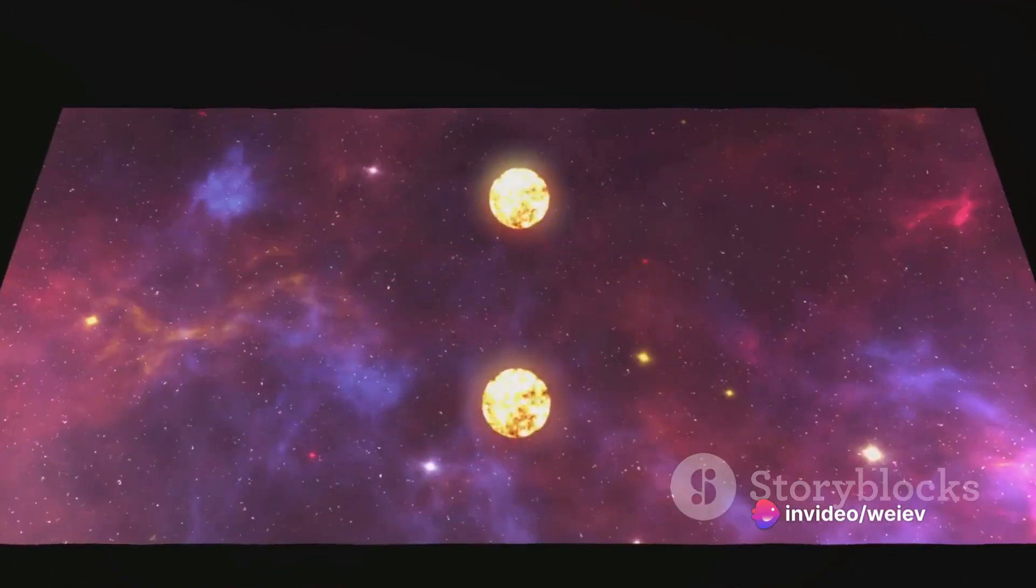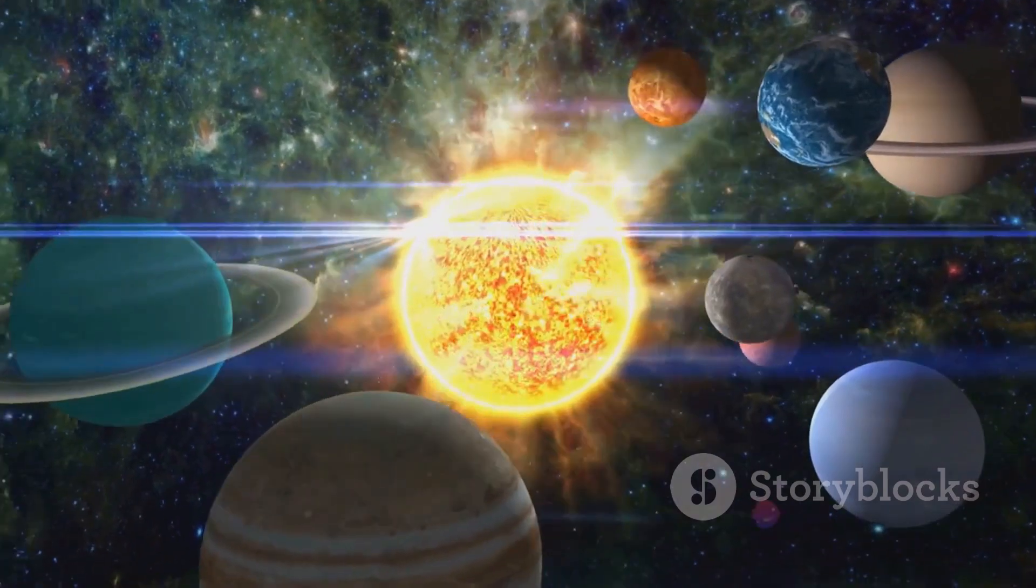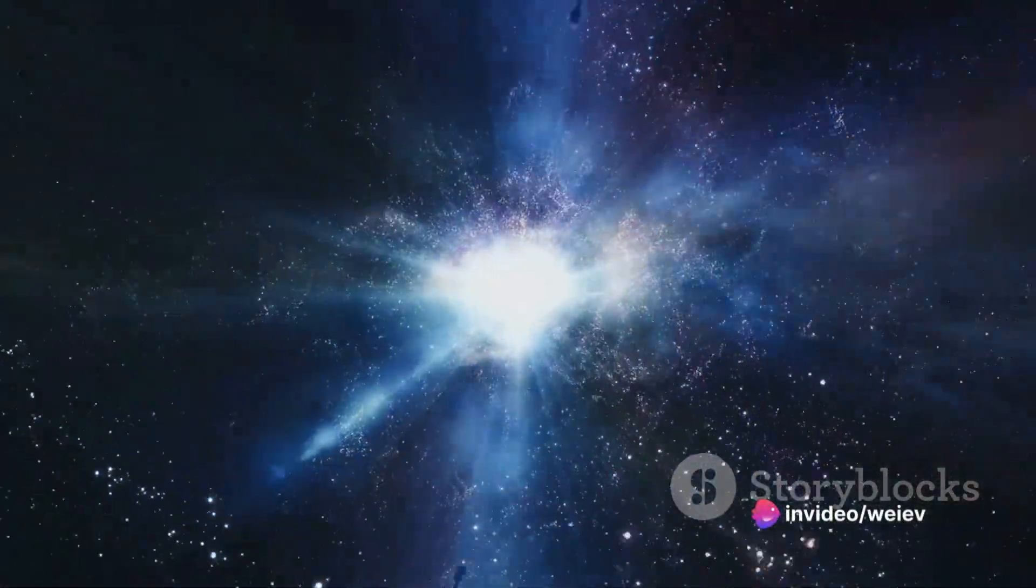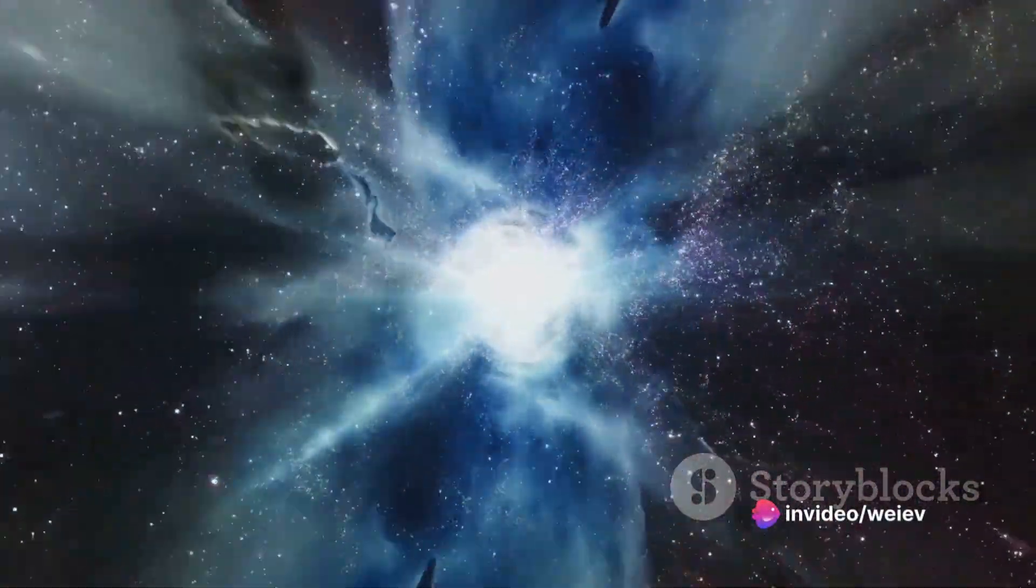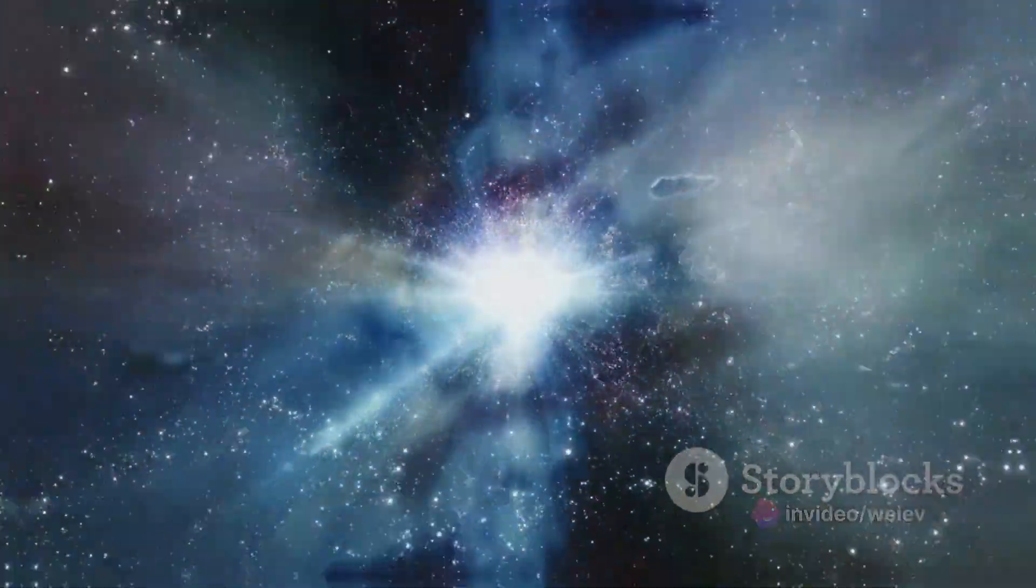Its gravity would pull at our planet, causing tides unlike anything we've ever seen. The night sky would be illuminated by its strange pulsating light. Our solar system forever altered. What would the arrival of such a dense celestial body mean for us, and how would it reshape our understanding of the universe?